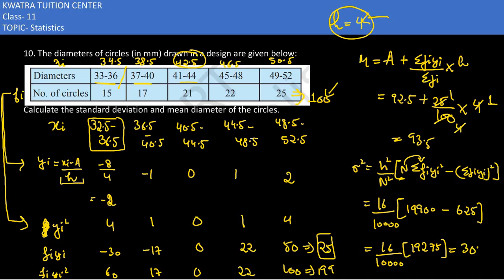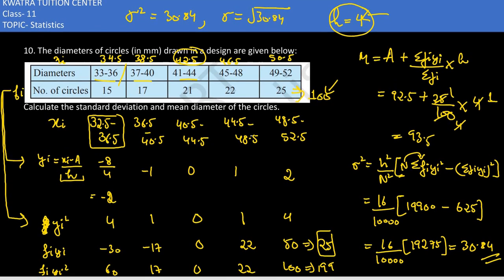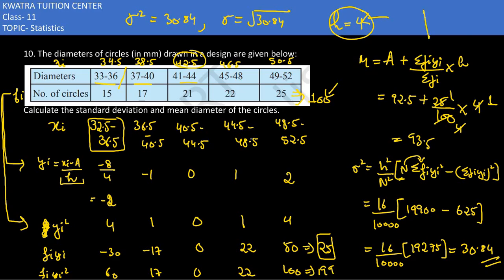Now, standard deviation = √variance = √30.84. To find the square root, we work through the calculation: √30.84 ≈ 5.5. So the standard deviation is approximately 5.5. You can leave it here or carry one more step for greater precision.